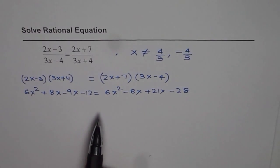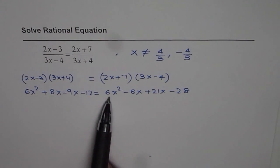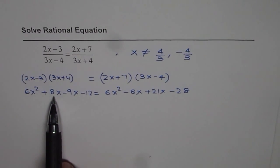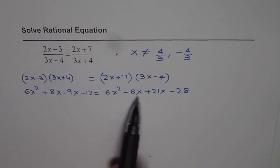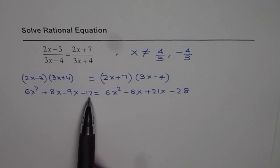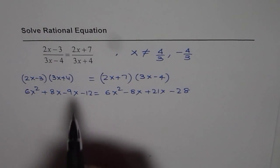So we have a quadratic equation. 6x squared on both sides will cancel. We can bring all the x terms and constants together by moving them to one side.